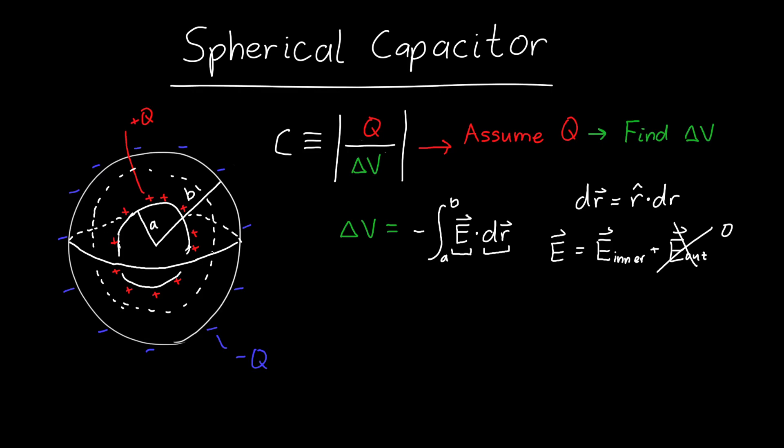You could use Gauss's law to find the electric field. You could also recognize that because this is spherically symmetric, it's going to be the same electric field as for a point charge. My electric field is going to be Q, plus Q, over 4π epsilon naught R squared times little r hat, pointing out in the radial direction.